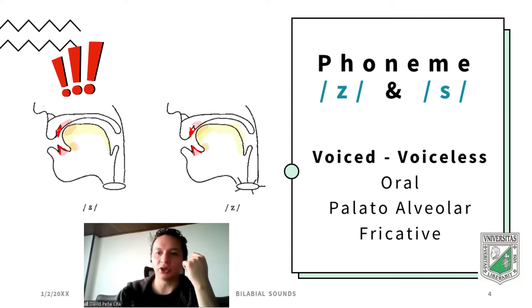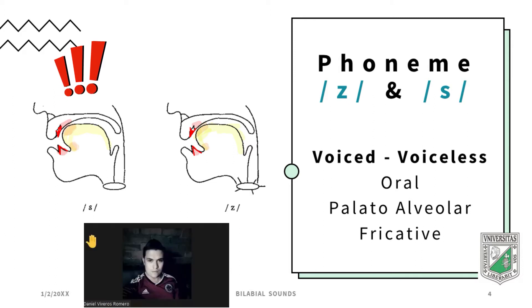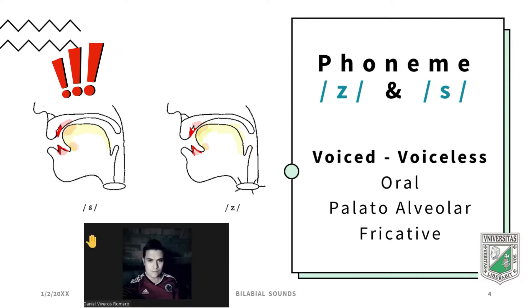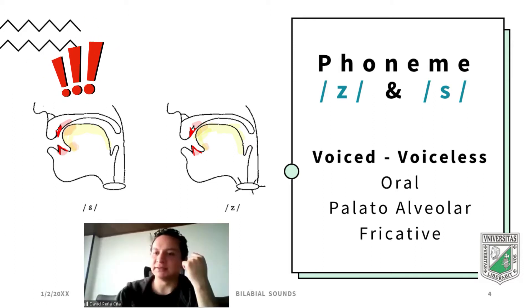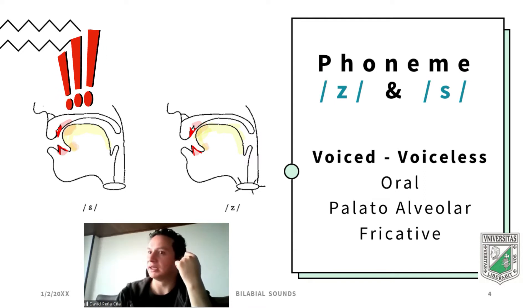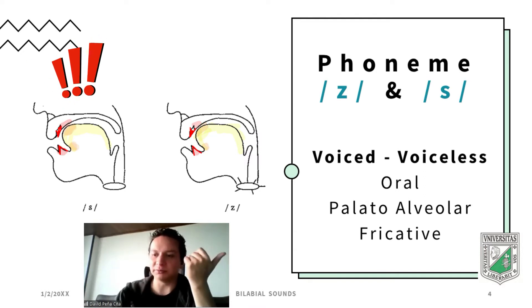The /s/ sound — not /sh/, but /s/ — as in 'sa, sa, sa.' It's the same as in 'saco' in Spanish. The word 'ask' contains this /s/ sound, as in 'ask' and 'pacific.'